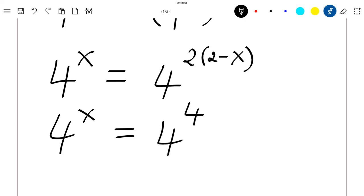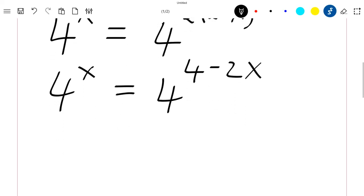At this level, you can directly say that x is equal to 4 minus 2x because you have 4 here and 4 here. Or you can, which is the same thing, just apply the log function on both sides of this equation.